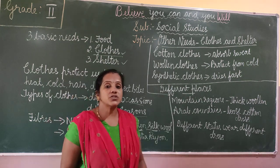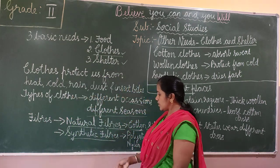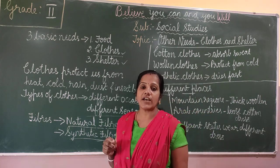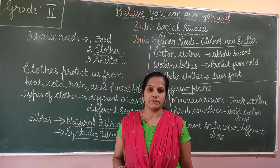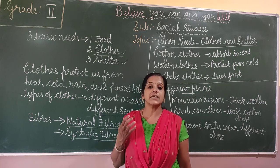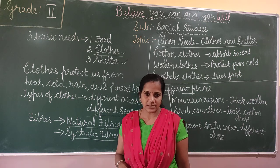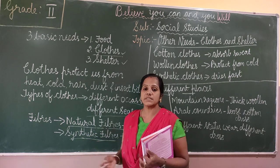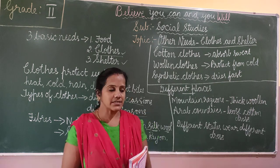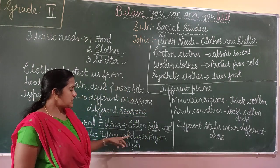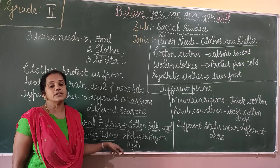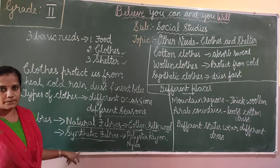These are the natural fibers. Synthetic fibers are man-made fibers which are made by mixing chemicals in factories. Polyester is one example of a synthetic fiber. These are some of the synthetic fibers.